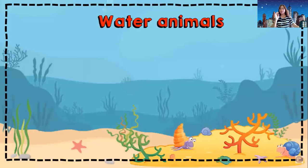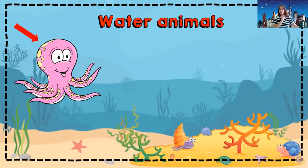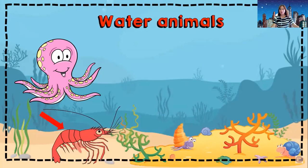We call these water animals — they are the animals that live in the water. What are those animals? Do you know what animal this is that lives in the water? It's an octopus. Yes, an octopus cannot live in the air and also cannot live on land; their habitat is in the water. They will die if you put them on land or in the air. Another water animal is shrimp — yes, shrimp is a water animal; shrimp live in the water.